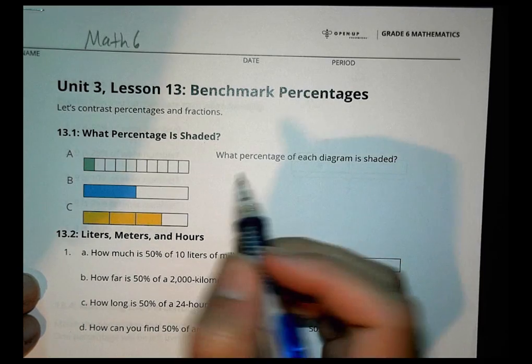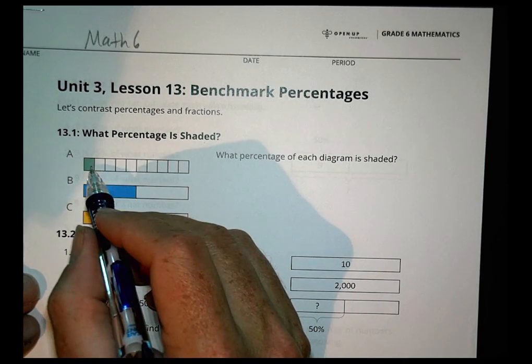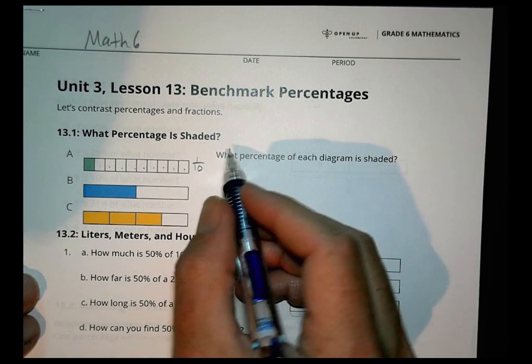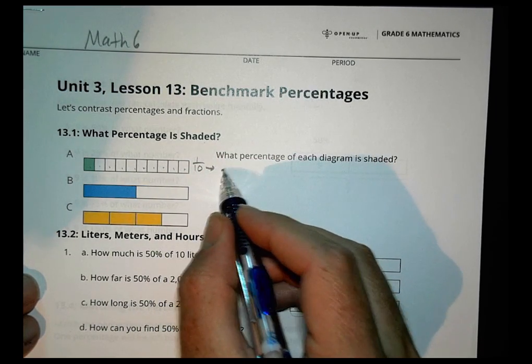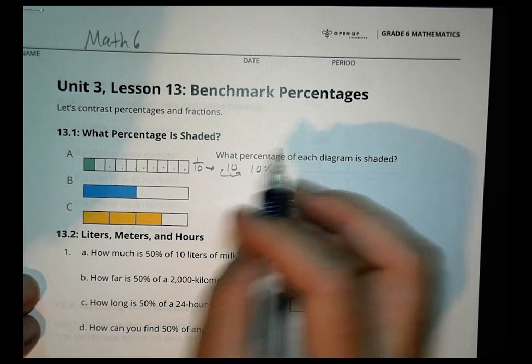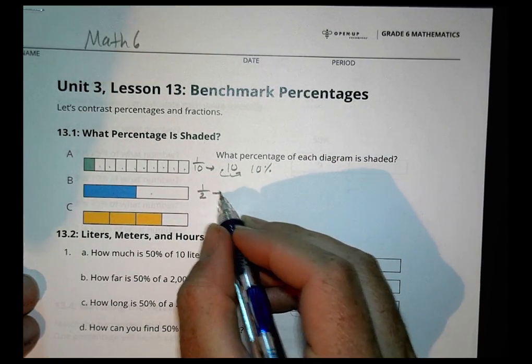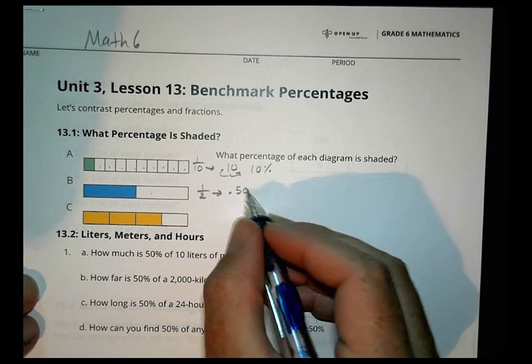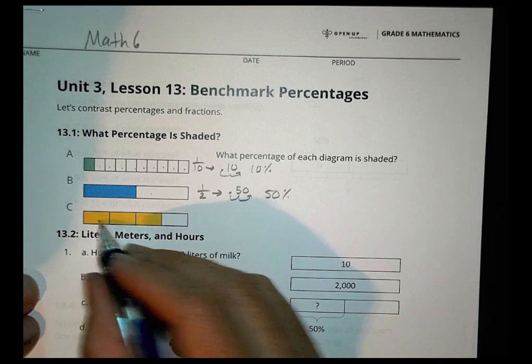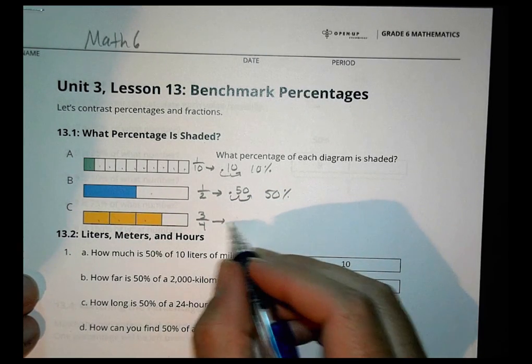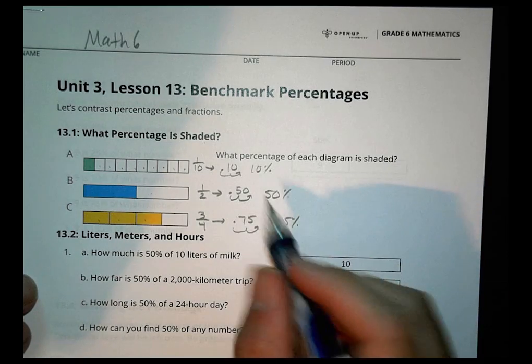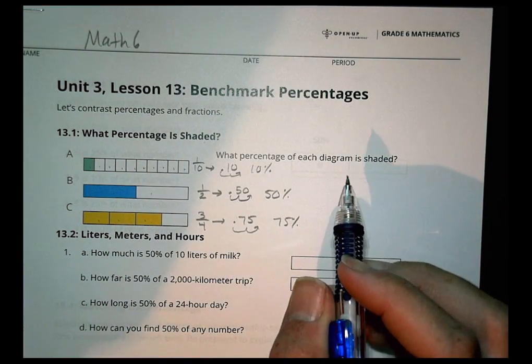So first we begin with what percentage is shaded here. When we take a look at the first one, we can see that there are 10 equal parts here. There are 1 out of 10 boxes shaded in, which gives us the decimal 0.10, which becomes 10%. Over here we have 1 of the 2 boxes, or a half, and a half as a decimal is written as 0.50, so as a percentage that becomes 50%. On level C, we have 3 of them shaded out of 4. 3 fourths as a decimal becomes 0.75, and as a percentage that becomes 75%.